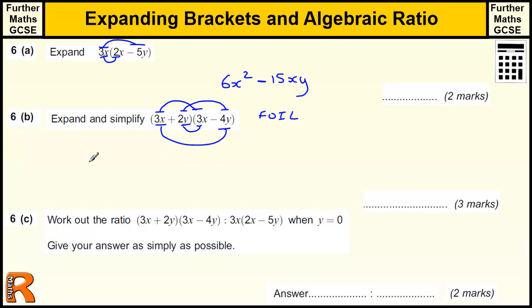So we've got 3x times 3x, 3 times 3 is 9, x times x is x squared. 3x times minus 4y, so there's a minus, 3 times 4 is 12, x times y is xy. And then we've got 2y times 3x, 2 times 3 is 6. Now it says y times x, but when I'm multiplying letters, I always write them down in alphabetical order, xy, so then it's clear which ones we can combine and which ones we can't.